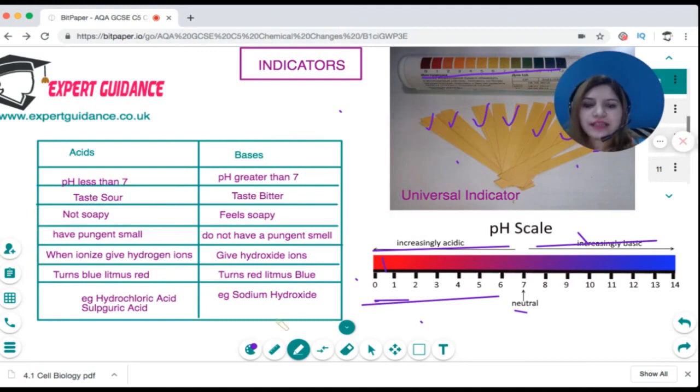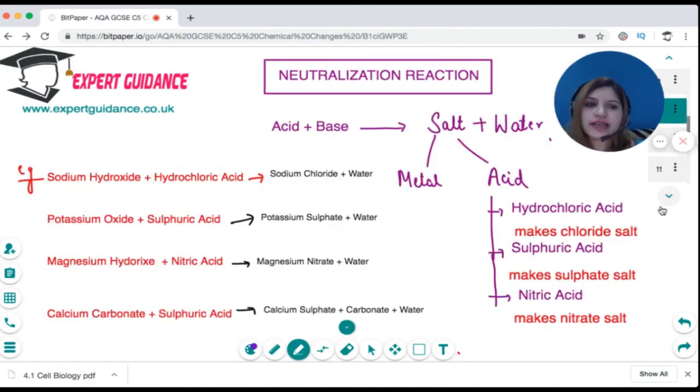Let's tabulate the differences between acids and bases. Acids have pH less than 7, taste sour, are not soapy, have a pungent smell, ionize to give hydrogen ions, and turn blue litmus red. Example: hydrochloric acid or sulfuric acid. Bases have pH greater than 7, taste bitter, feel soapy, do not have a pungent smell, give hydroxide ions, turn red litmus blue. Example: sodium hydroxide.